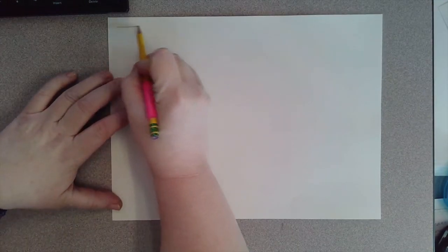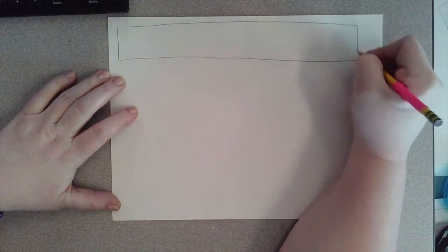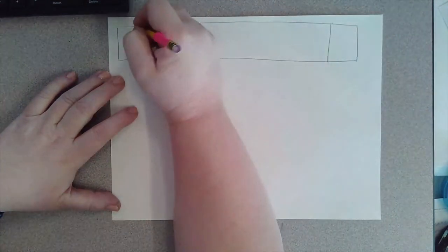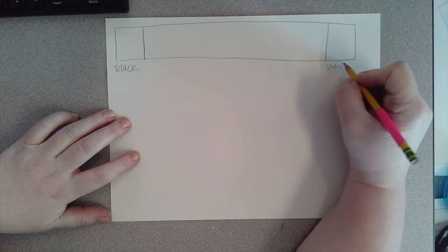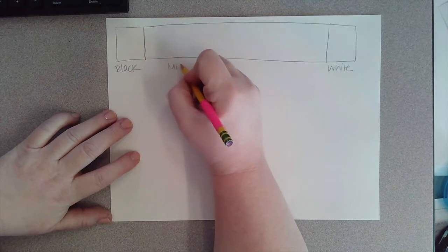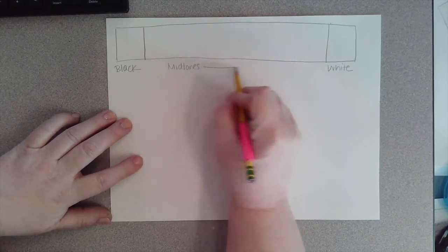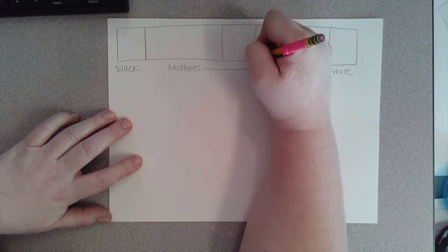All right fourth graders, this week we're going to talk about value and shading. The very first thing we're going to do is draw a value scale. Value is a term that refers to how light and how dark something is, so we're talking about going from black to white and all of the gray mid-tones in between. We're going to have our medium gray right here in the middle.